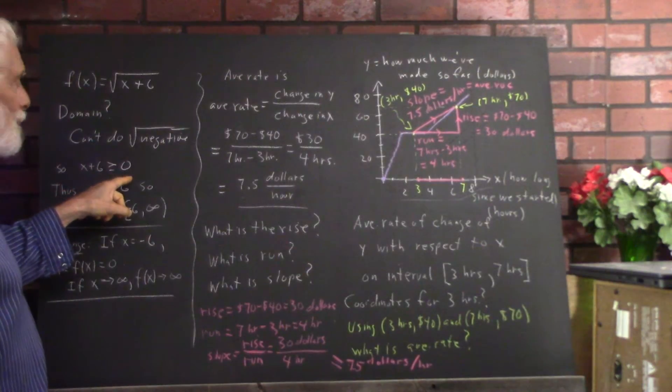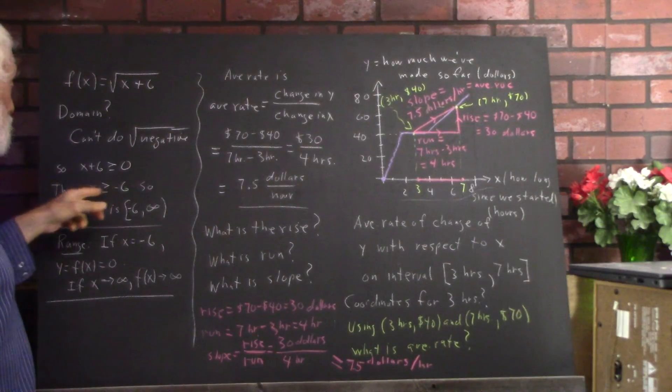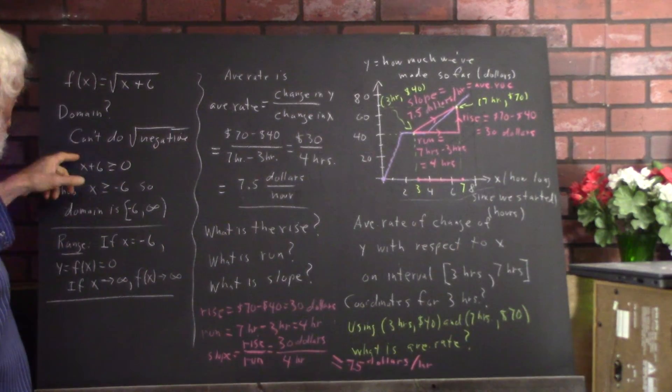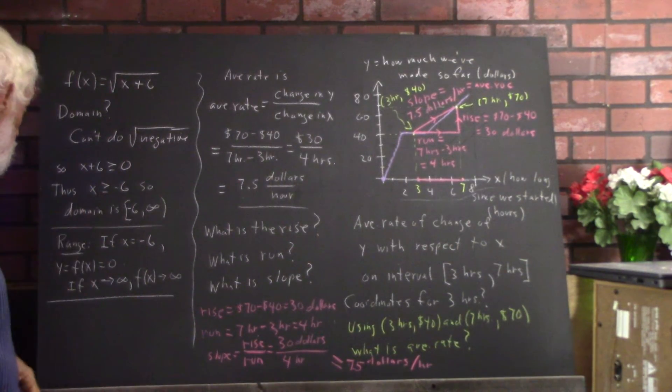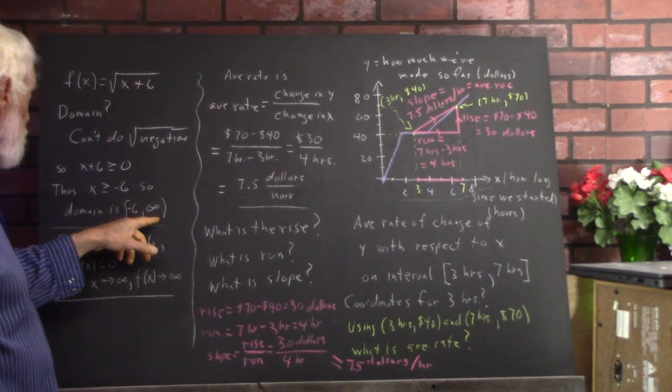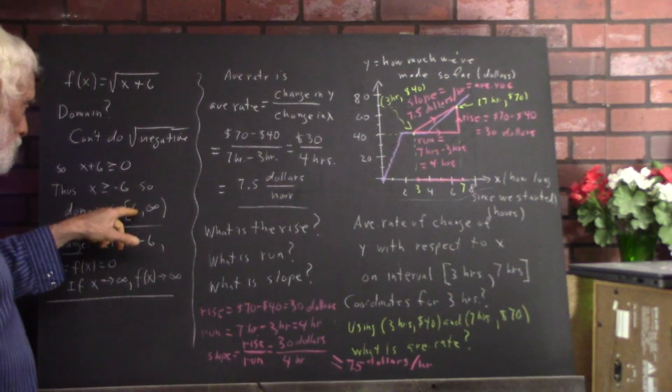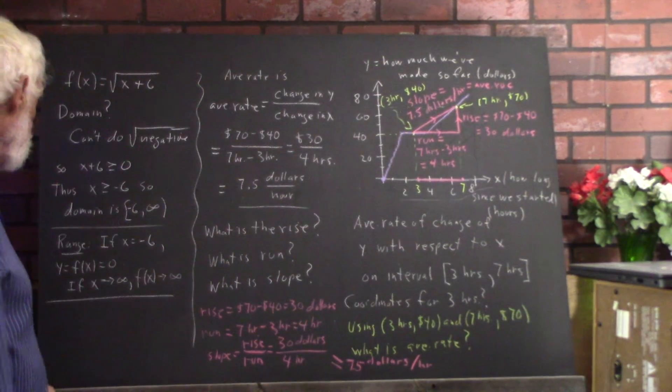So x plus 6 has to be greater or equal to 0 so that it isn't negative. And so x has to be greater or equal to negative 6. You just solve this inequality very easily. And your domain is then negative 6 to infinity because any number greater or equal to negative 6 works. That's what the interval negative 6 infinity embodies.